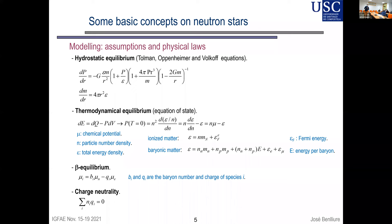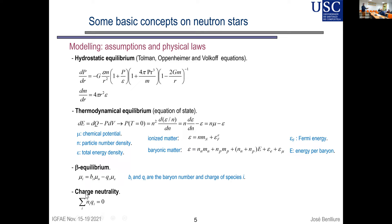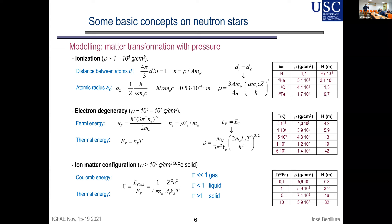First, I'll refresh some concepts about matter inside the neutron star. The principle physics is not too complicated at first order: using a few assumptions and physical laws you can get a good idea of matter inside the star. These include the famous Tolman–Oppenheimer–Volkoff equations, the equation of state, beta equilibrium, and charge neutrality. These are the basic tools used to discuss the interior.